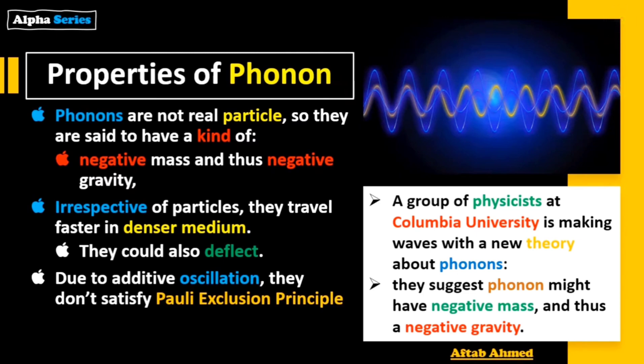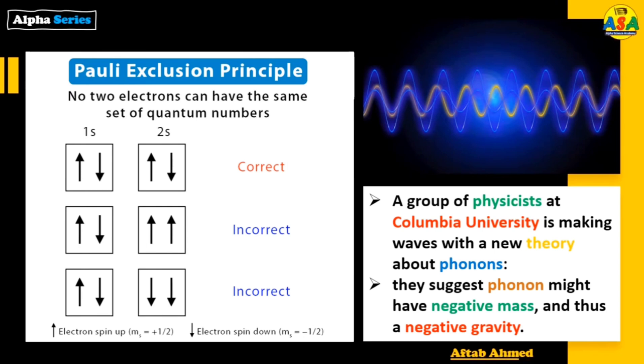What is Pauli exclusion principle? It is that no two electrons can have the same set of quantum numbers. Just like in 1s and 2s shells, the first example is correct and the second and third are incorrect because for 2s both electrons have spin up or both have spin down, which is against Pauli exclusion principle.